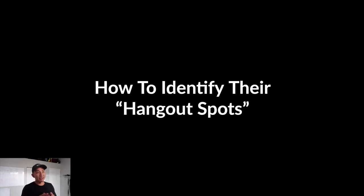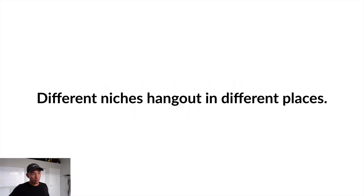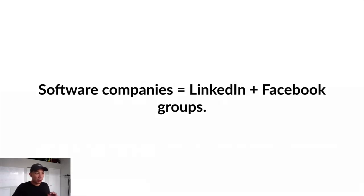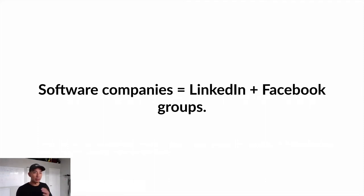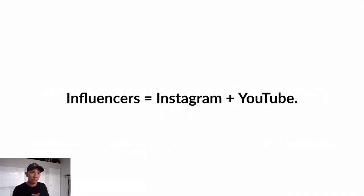Let's talk about how to identify your dream client's hangout spots — how to figure out where they hang out online so you can get the best possible response rate. Different niches hang out in different places. For example, software companies: LinkedIn and Facebook groups are great if you're targeting software founders. LinkedIn lets you target by job title and industry, and there are tons of Facebook groups with software founders.